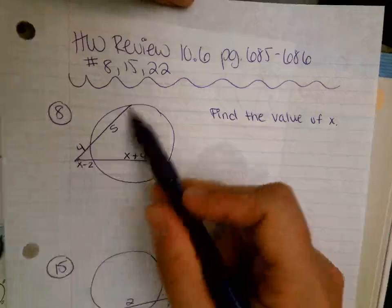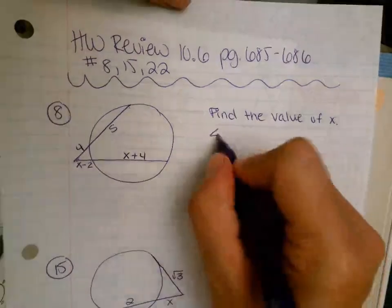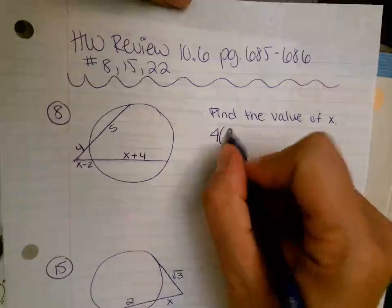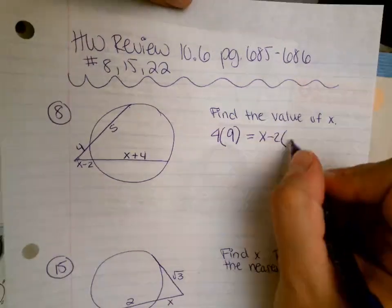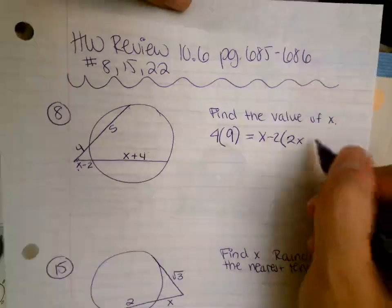So outside times whole, 4 plus 5 is 9, equals outside times whole. x plus x is 2x. Negative 2 plus 4 is 2.